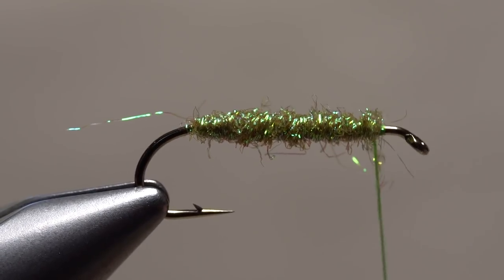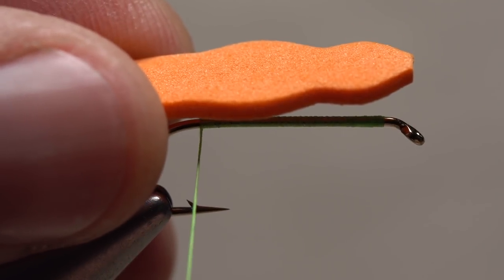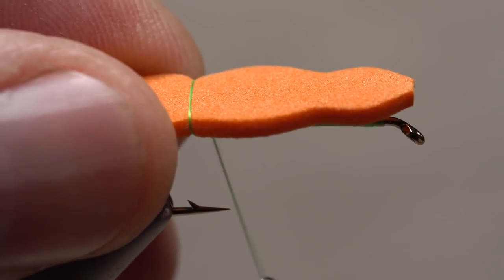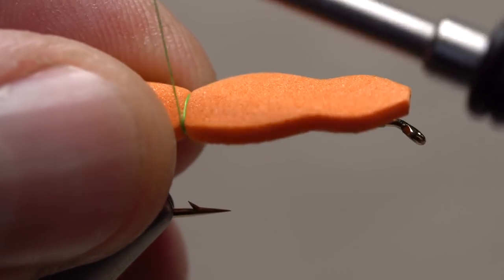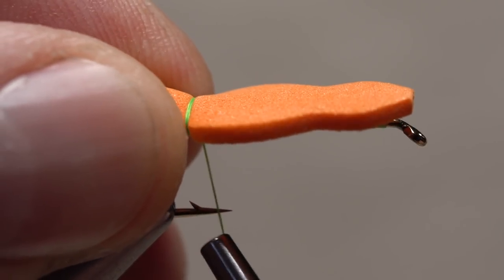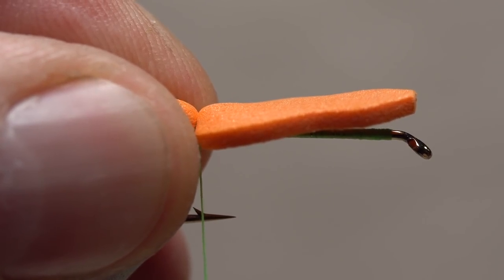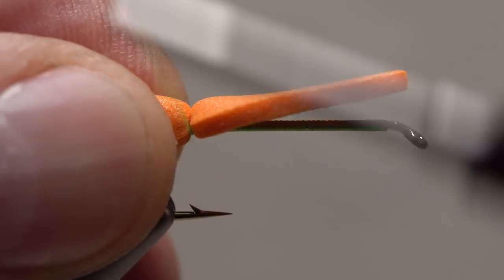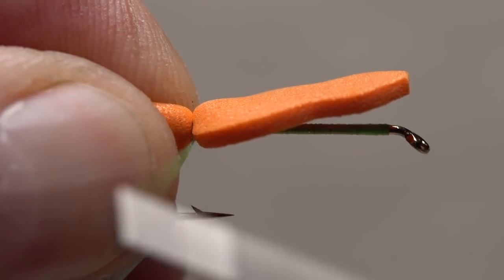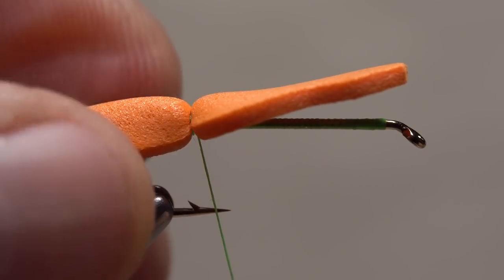To actually attach the foam to the hook, I like to correctly position it, then take two loose wraps of tying thread, squeeze and compress the foam in my fingertips, then pull tight on my tying thread to close the two prior turns down and secure the foam. I'll then add a few more tight wraps as insurance. Even with the foam locked down in this manner, the connection is a bit tenuous.